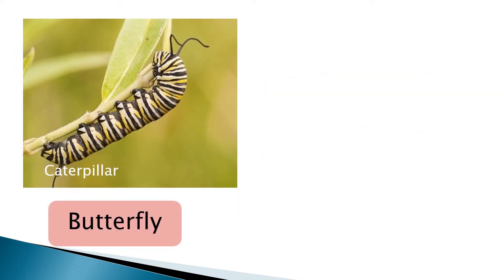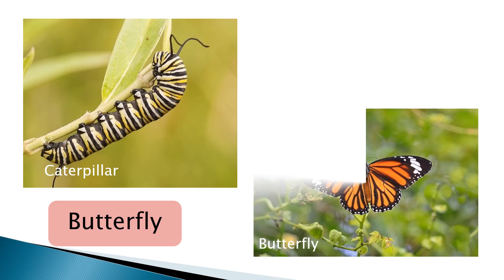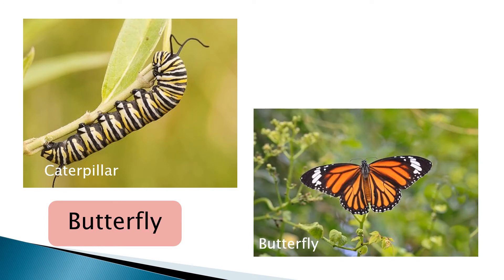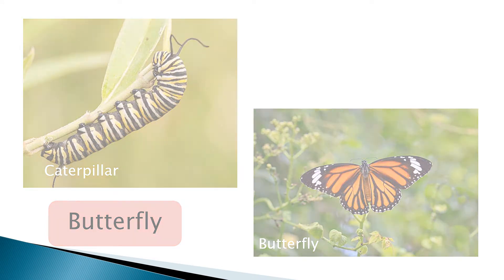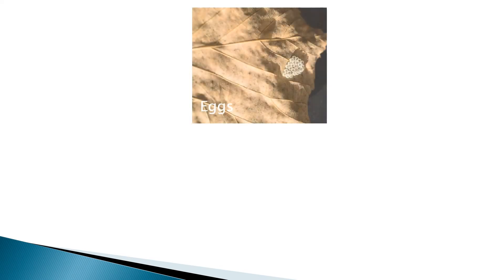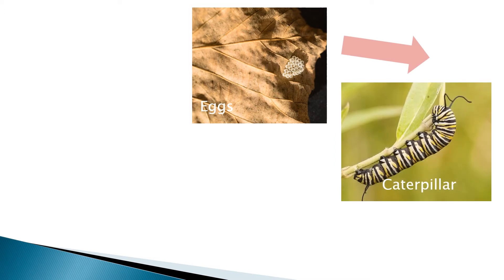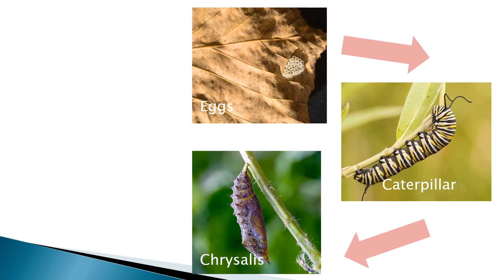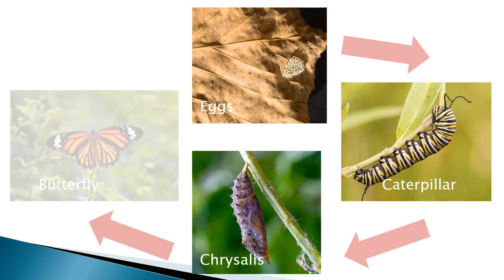Some animals though, like this caterpillar, will look very different when it grows into an adult butterfly. An adult butterfly will lay its eggs somewhere safe like on a leaf. From these eggs caterpillars will hatch, and once the caterpillar is big and strong the caterpillar will make a chrysalis. From inside the chrysalis the caterpillar will go through many changes and after a few days emerge as a butterfly.